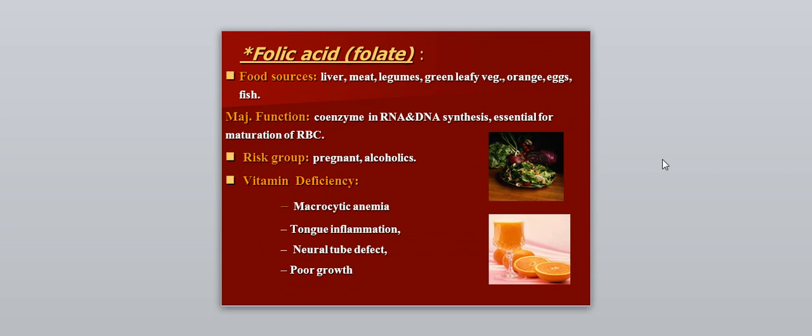Folic acid or folate. Major food sources include liver, meat, legumes, green leafy vegetables, oranges, eggs, and fish. The major function is acting as a coenzyme in RNA and DNA synthesis, and it is essential for maturation of red blood cells. The risk group includes alcoholics and pregnant women. Folate deficiency causes macrocytic anemia, tongue inflammation, neural tube defects in pregnancy, and poor growth.